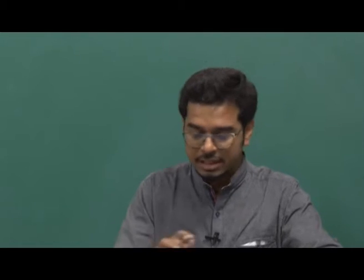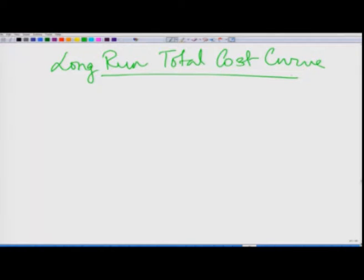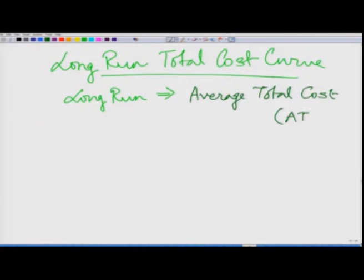Now I will move to discussing the long run total cost curve. In the long run production function, when we talk about the cost mechanism, we primarily look at the average total cost — the long run average total cost, or LRATC. This LRATC is also known as a planning curve.